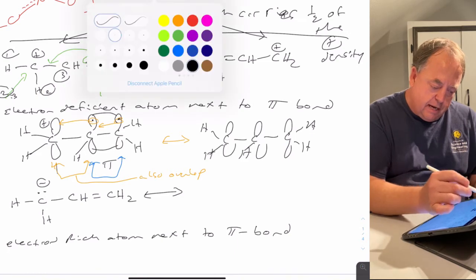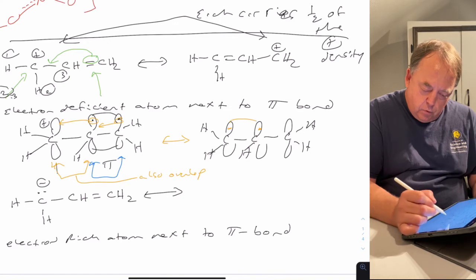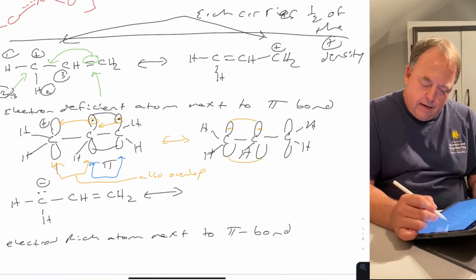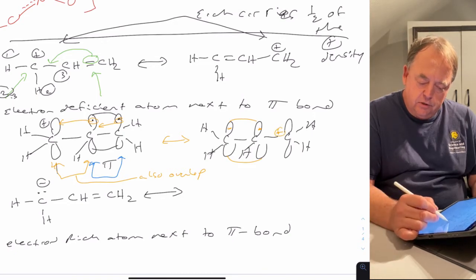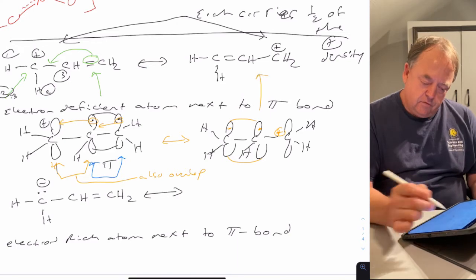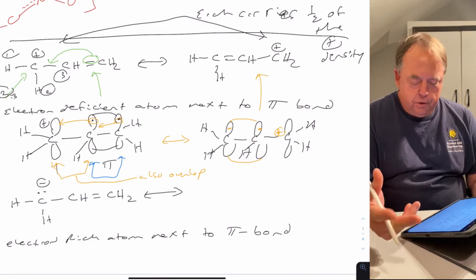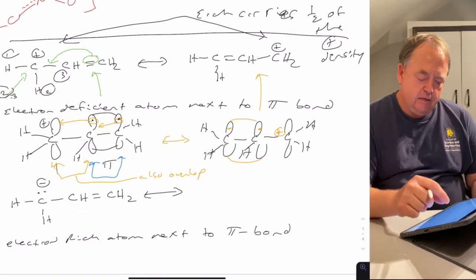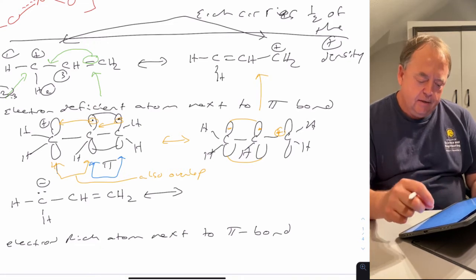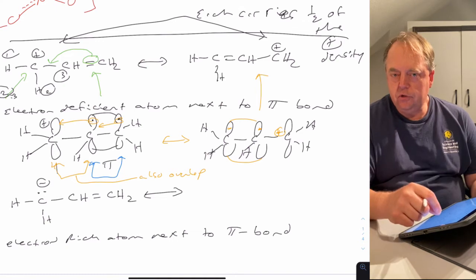Now we have one electron here and one electron here overlapping to make a double bond, and the carbon on the right now only has six electrons around it, so it's positively charged and electron deficient. That structure corresponds to the second resonance structure. In this class, you should be able to sketch out the pi system, show where the electrons are, and show how they move through the pi system to get from one resonance structure to another.